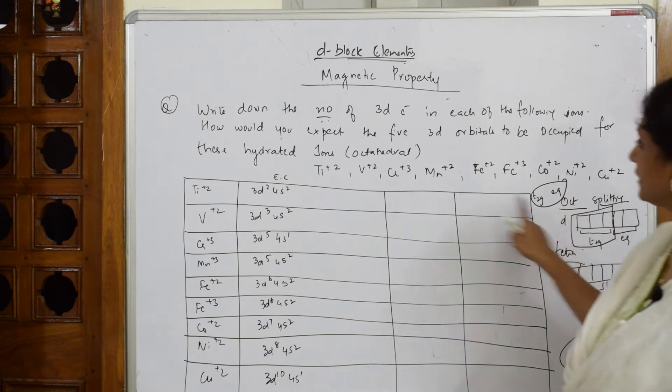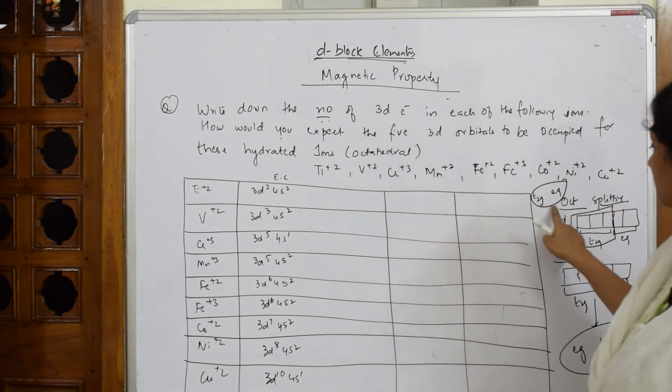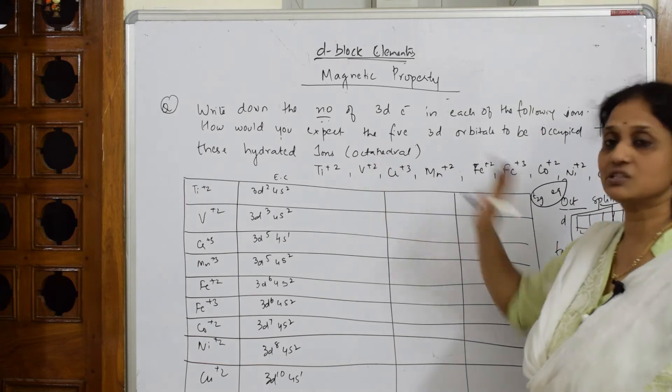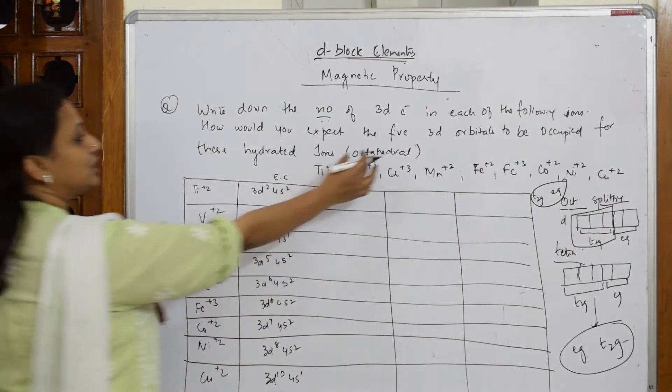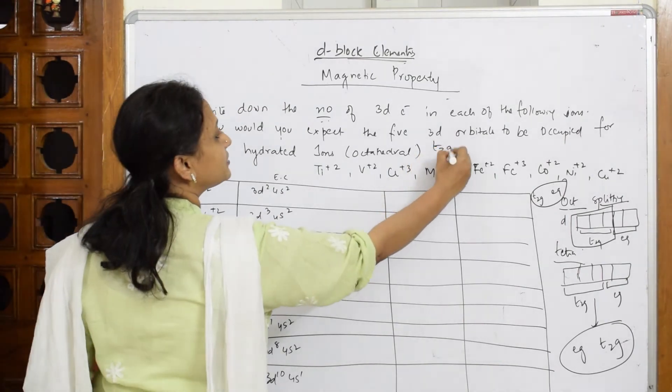Now, what should I apply? I have to apply T2G concept here. I have to apply octahedral splitting. So that is what they said. Okay, let us start. So now I know octahedral means T2G comes first and then EG.